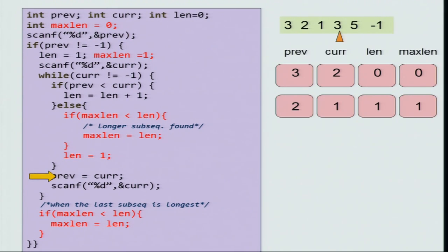Previous is current. So, previous becomes 1 and you scan the next number which is 3. Now, at this point again previous is 1 and current is 3. So, the if condition is true. So, you extend the length. Length increases by 1.